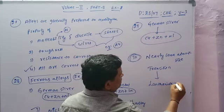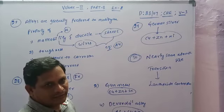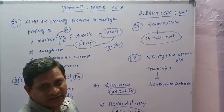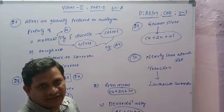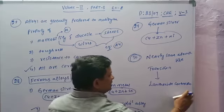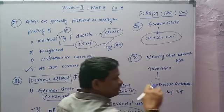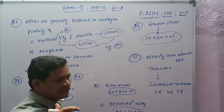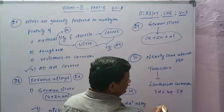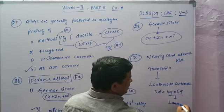Lanthanide contraction means the atomic radius steadily decreases from left to right across the periods of transition elements as well as lanthanides. Lanthanide contraction is present not only in lanthanides but also in transition elements — the 3d, 4d, and 5d series. From 3d to 4d the size increases, and from 4d to 5d the size also increases, but due to lanthanide contraction, 4d equals 5d in size.